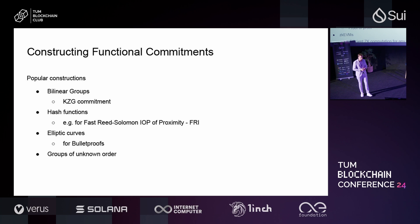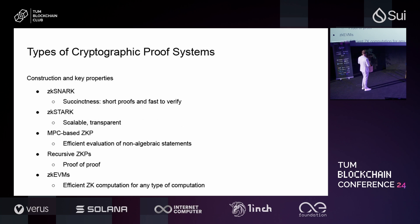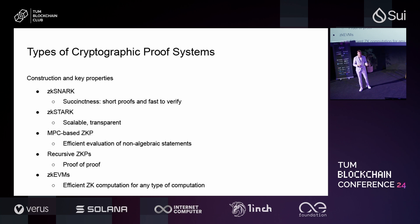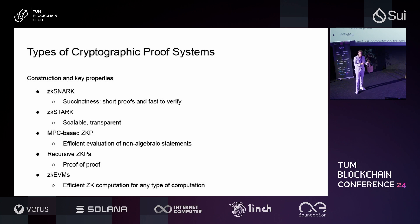Now let me speak about the types of proof systems that exist today. What I showed initially was an interactive argument of knowledge. If we want a non-interactive argument of knowledge we apply Fiat-Shamir to get the zero knowledge property — this is almost the term SNARK. Adding succinctness gives us SNARKs: you have very short proofs that are very fast to verify. SNARKs have this compression feature where you compute a proof and it is very cheap to verify the whole computation that has been proven.